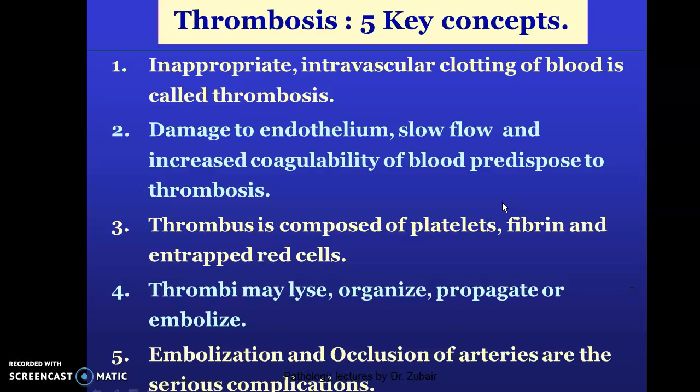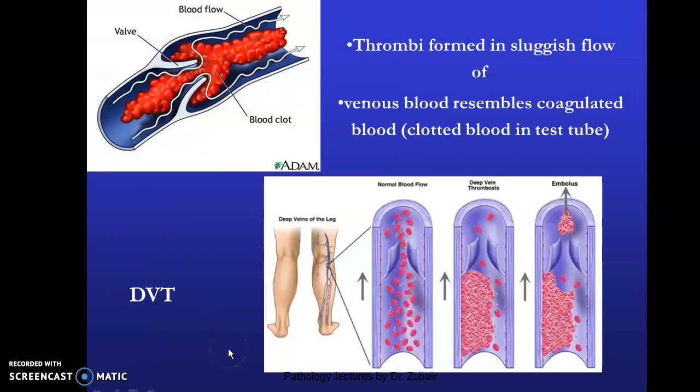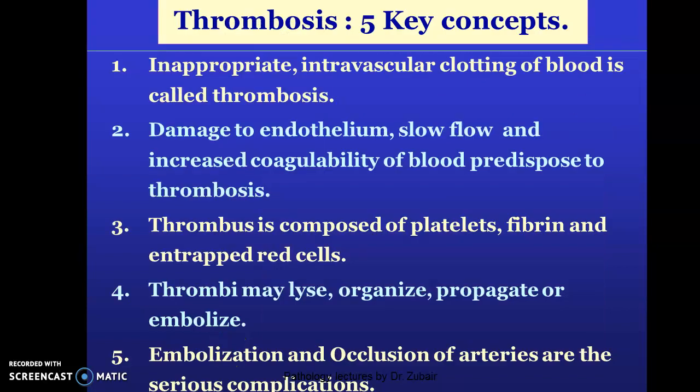Five key concepts of thrombosis: first, inappropriate intravascular clotting of blood is called thrombosis; second, damage to the endothelium, slow flow, and increased coagulability of blood predispose to thrombosis; third, a thrombus is composed of platelets, fibrin, and entrapped red cells; fourth, a thrombus may lyse, organize, propagate, or embolize; fifth, embolization and/or occlusion of arteries are serious complications. Thank you for your attention. Please like and subscribe to this channel.